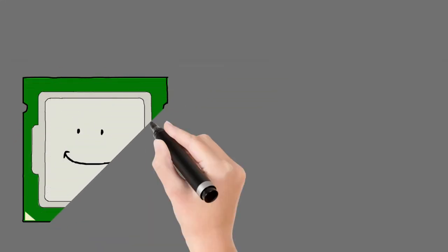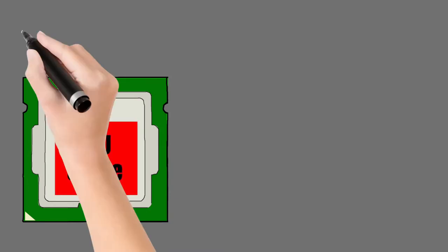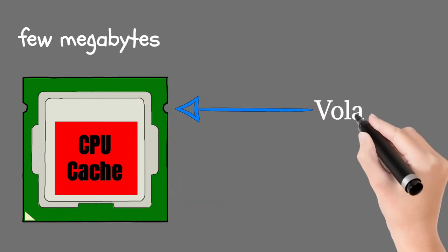On the other hand, a processor doesn't have that much storage in its cache memory—hardly a few megabytes, which is volatile in nature.